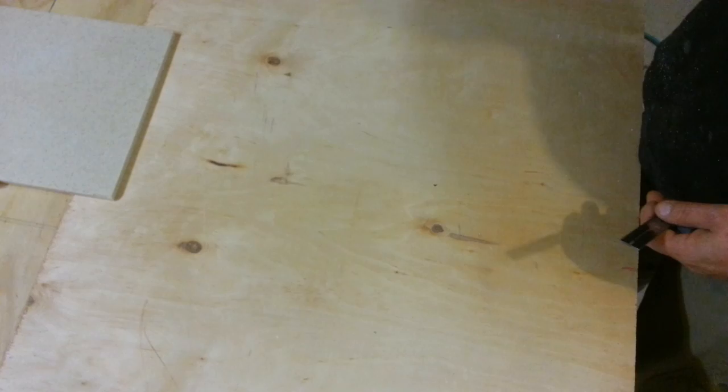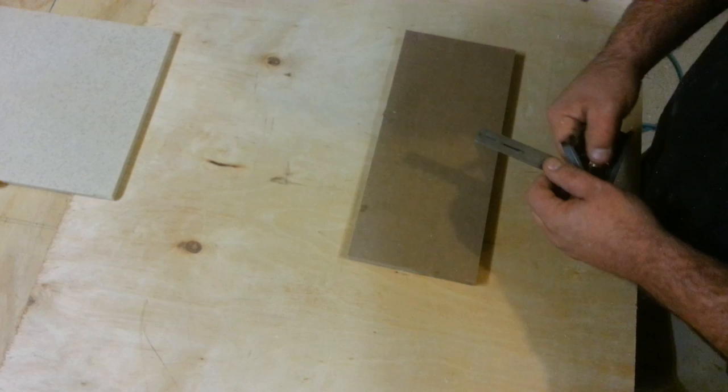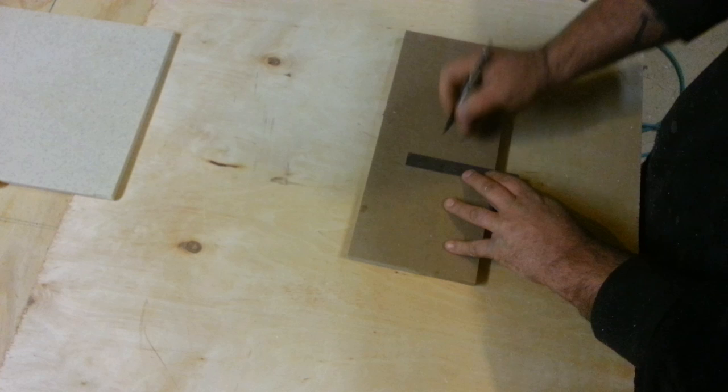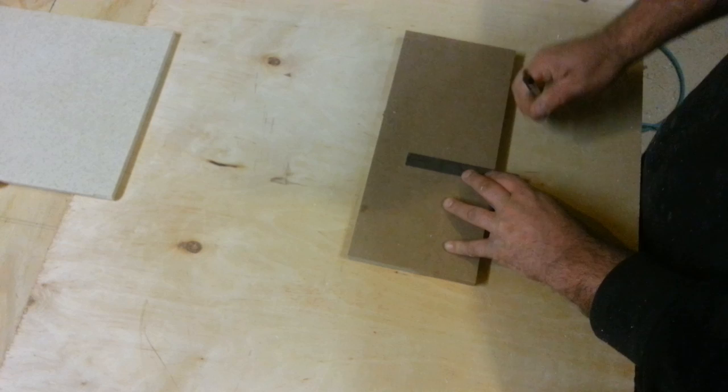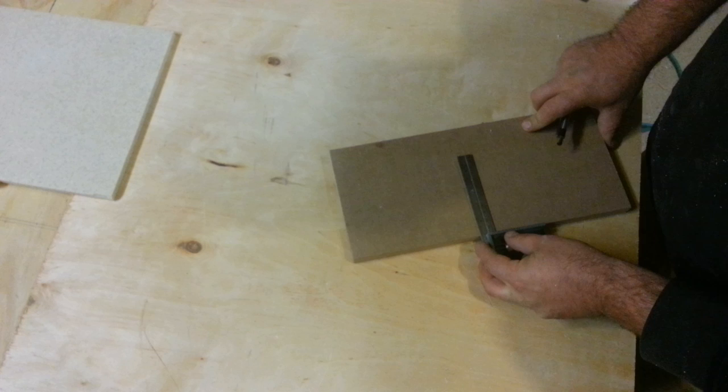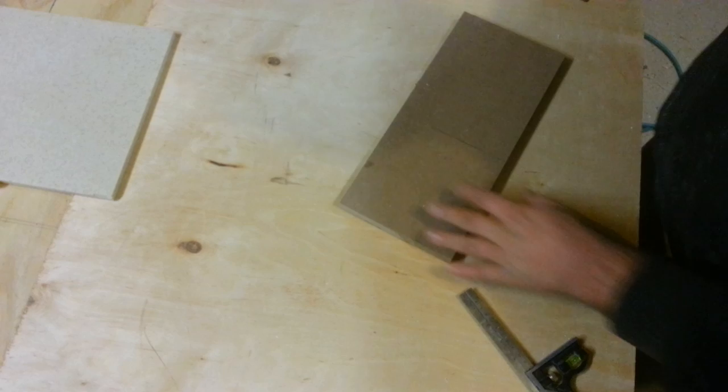Another quick tip is making sure your square is square. What do I mean by that? Well, whenever I get a new square, I like to check to see that it's square. The simple way of doing that is just taking your pencil, putting your square on a flat piece of stock with a straight edge on one side, and then flipping it over and making sure it's lining up perfectly.